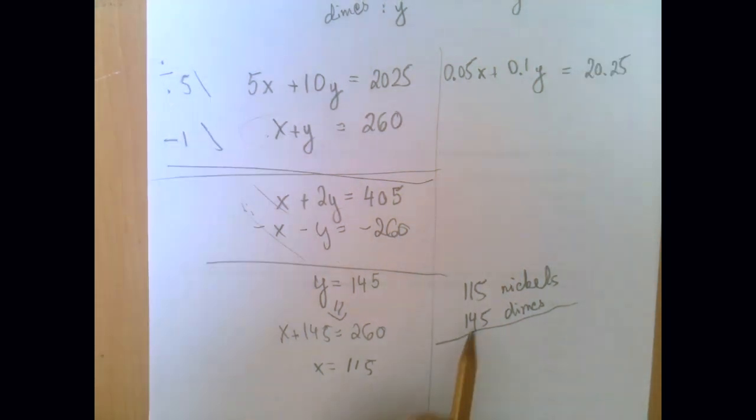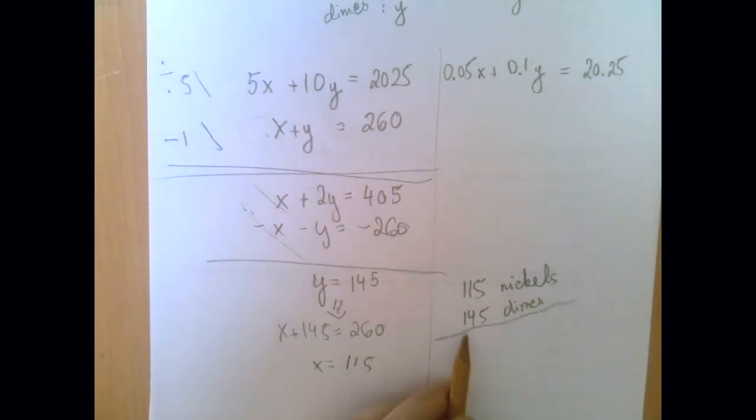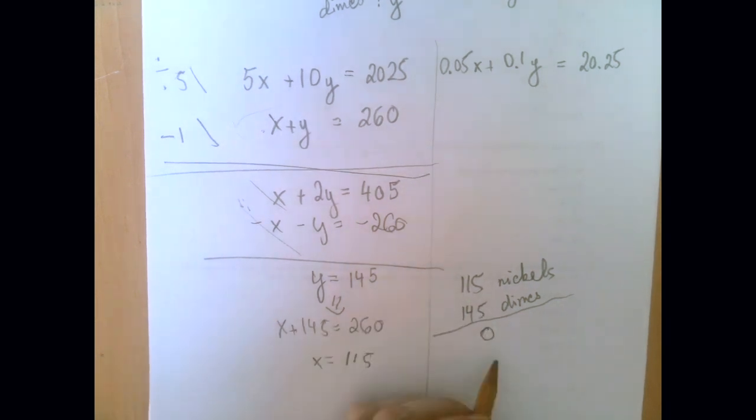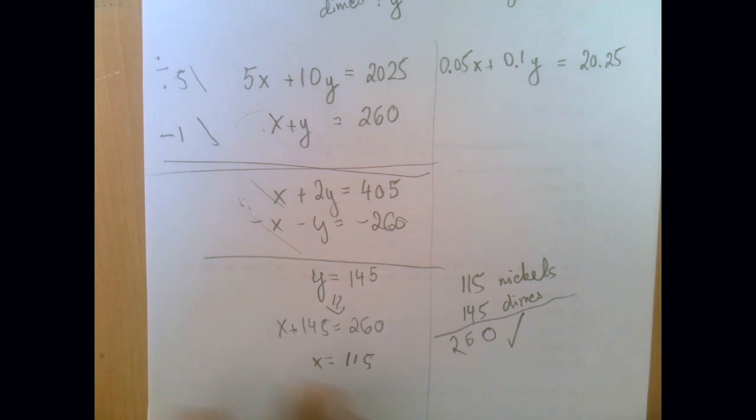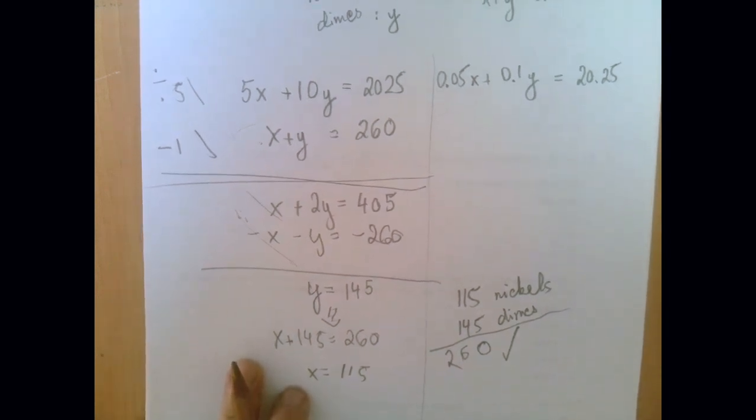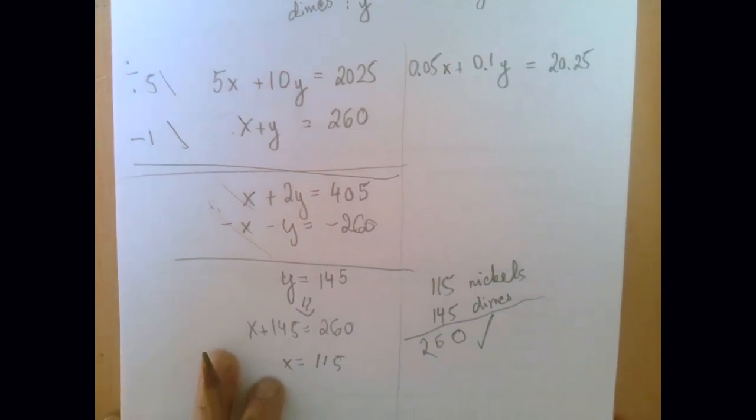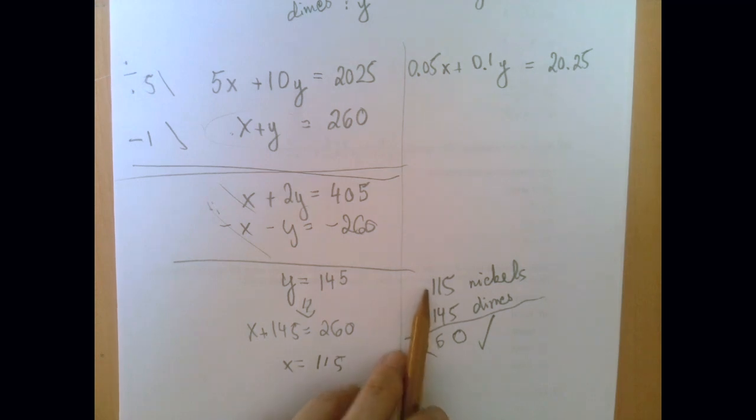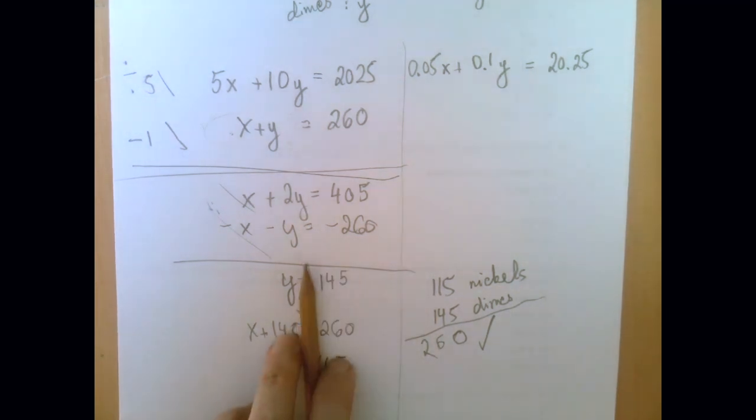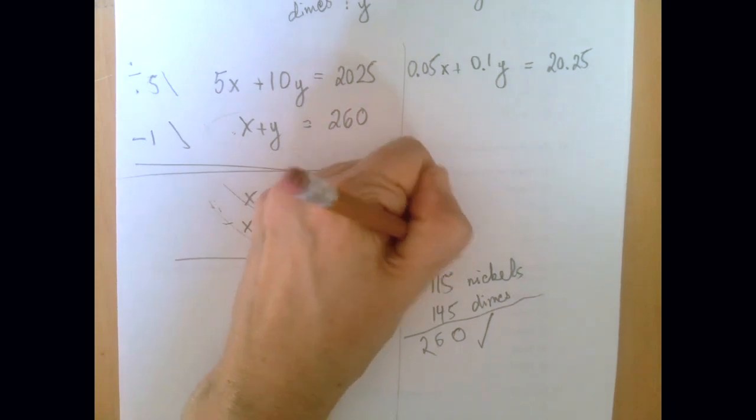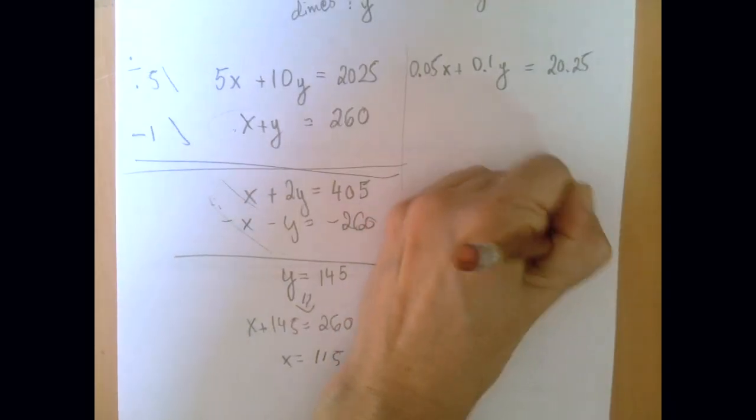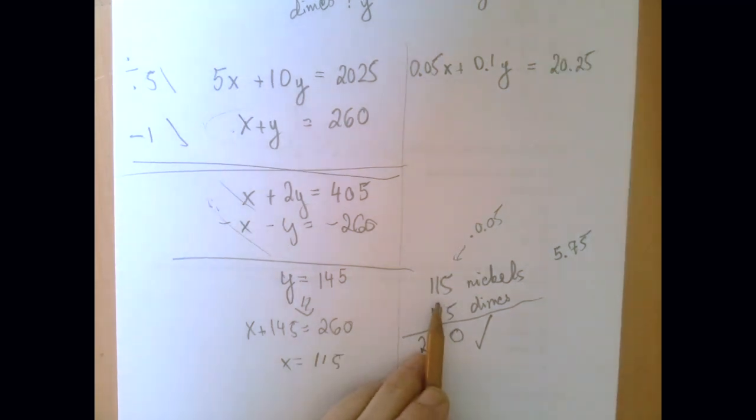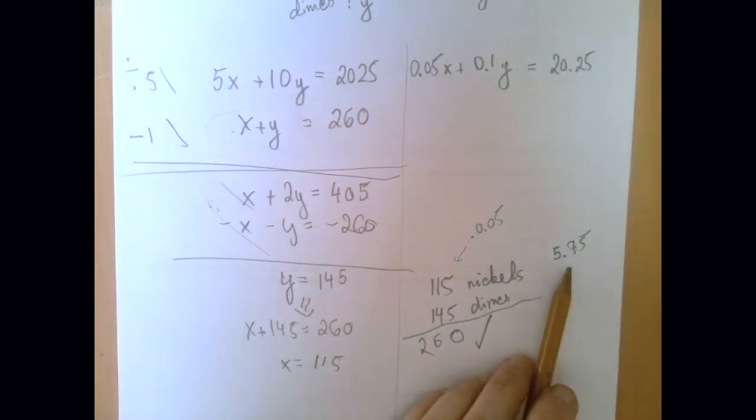Now let's check. The total number of coins should be the sum of these two numbers. So that's 260, yep, that worked. So we have indeed 260 total coins. Now what about the value of all these coins? Each nickel is worth 0.05 dollars, so when we multiply this number by 0.05, we get 5.75. So that means that these 115 nickels are worth 5 bucks and 75 cents.